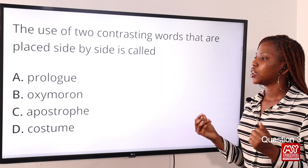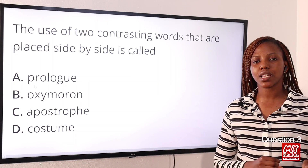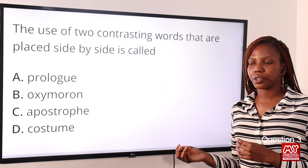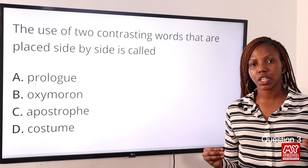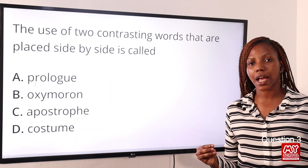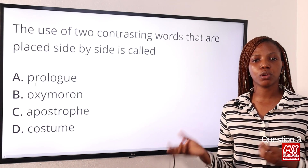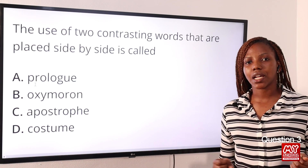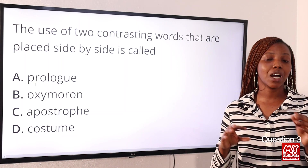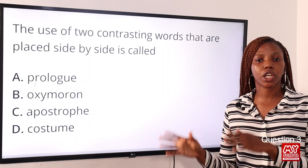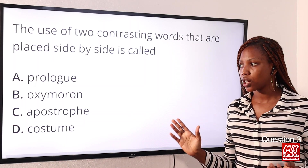Option A, prologue, is the opening of a story. Apostrophe is a figure of speech where you talk to inanimate objects as though they are physically present. Costume is a set of clothes typical for a particular occasion. So the answer to this question is Option B: oxymoron.